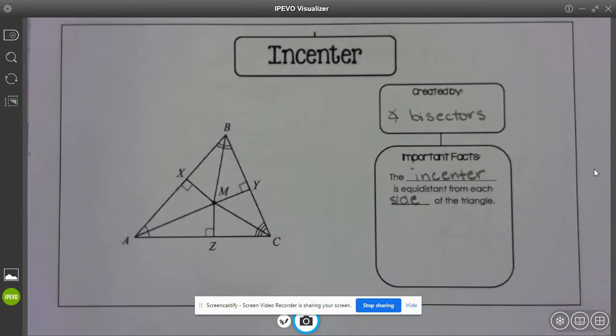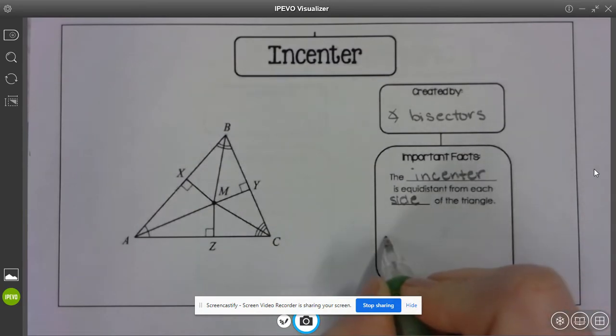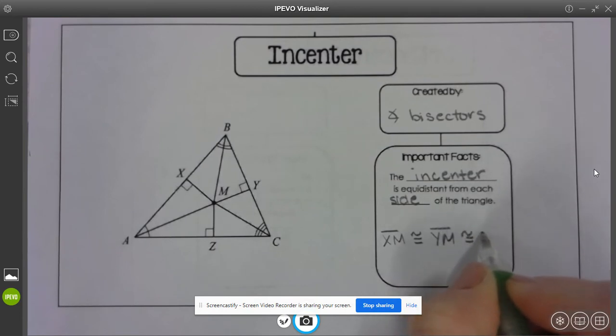With the incenter, it's equidistant from these points that are on the side of our triangles. So that tells me that XM would be congruent to YM and ZM.